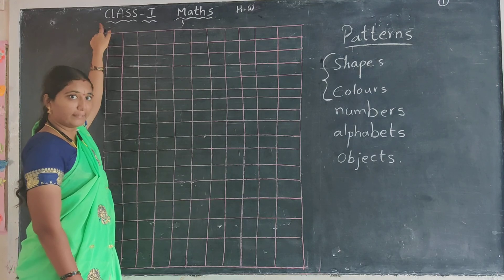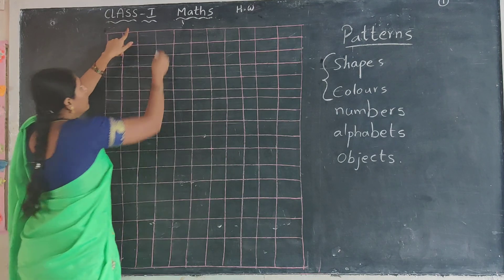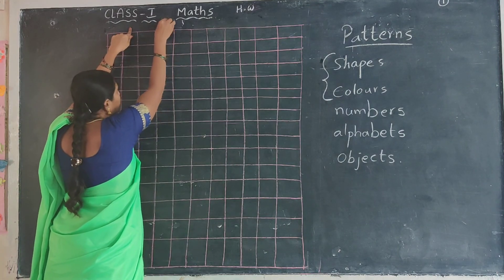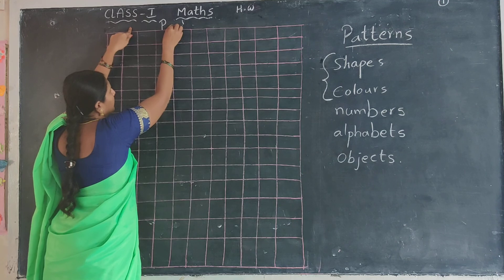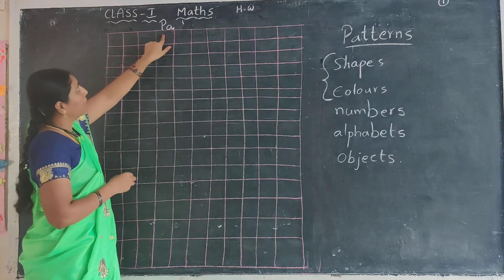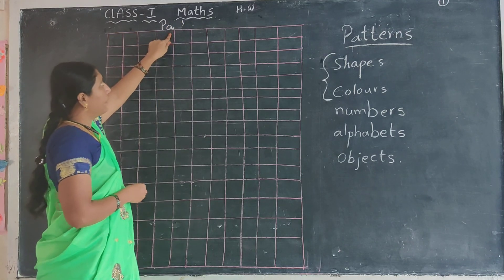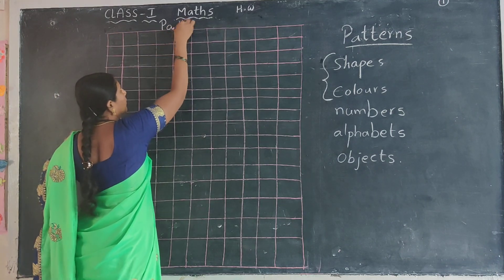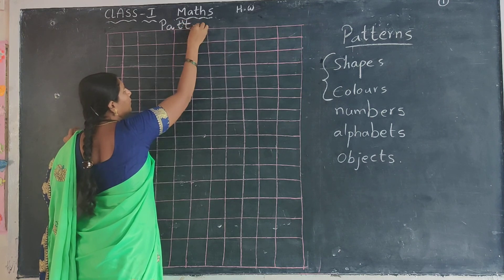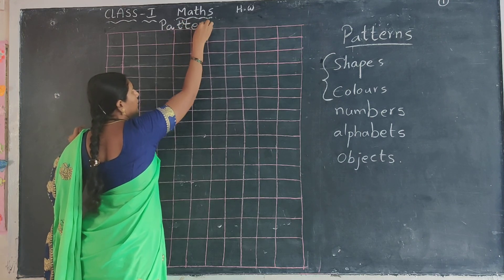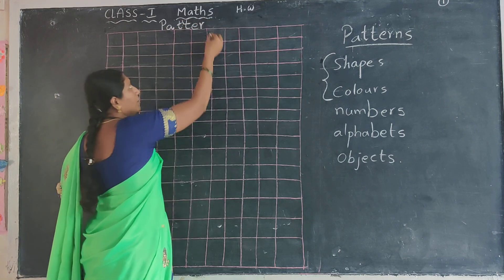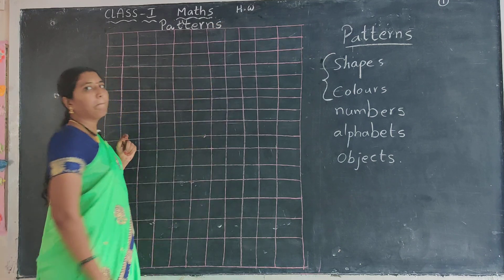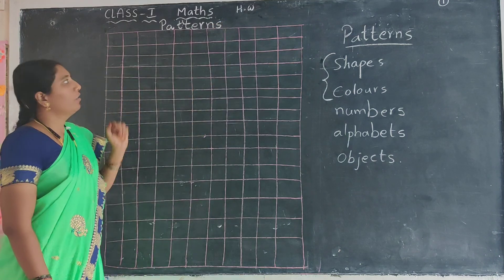You have to write that date only. And write here — put the heading: Patterns. Capital letter P-A-T-T-E-R-N-S. Patterns.